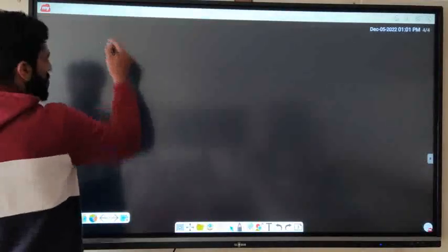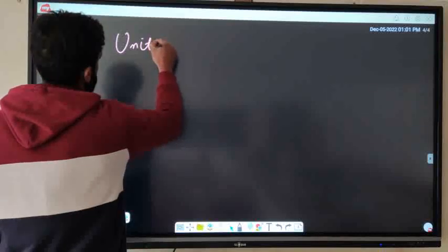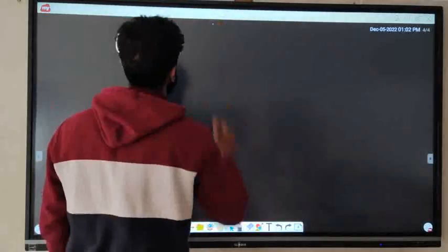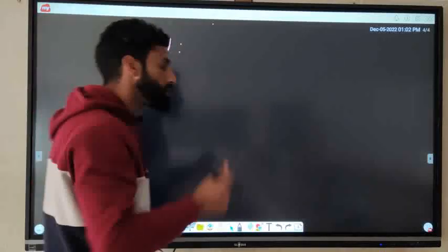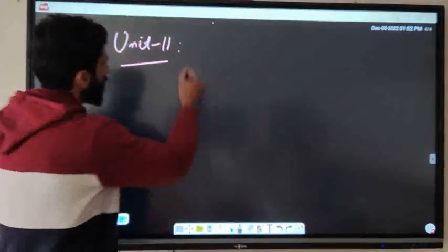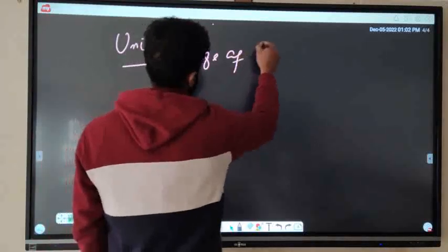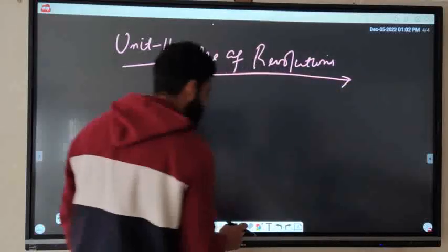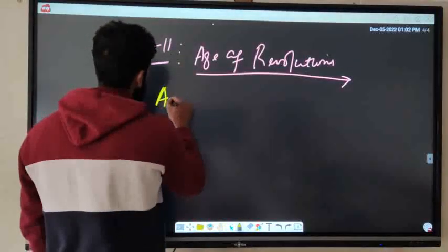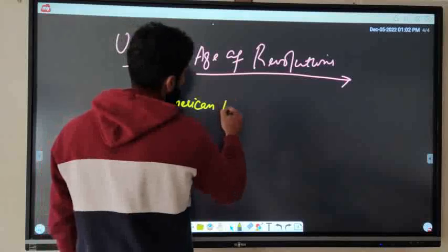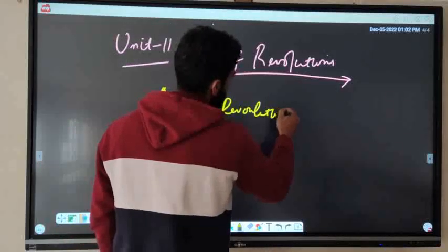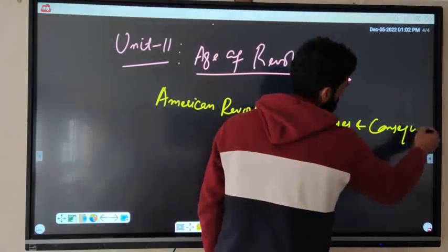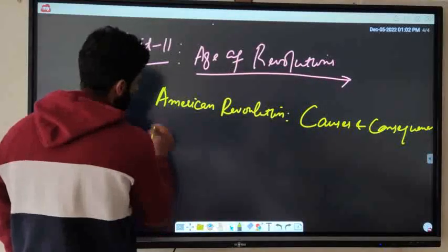Coming to unit two, that is the Age of Revolutions. The important topics are: American Revolution — causes and consequences, and second is Industrial Revolution — causes.